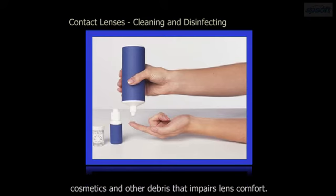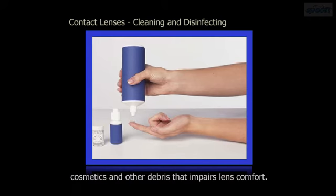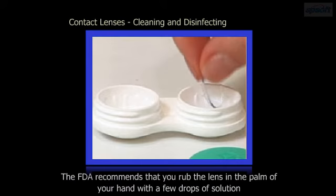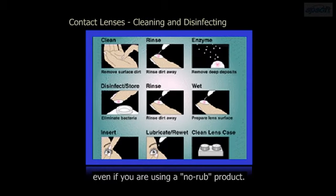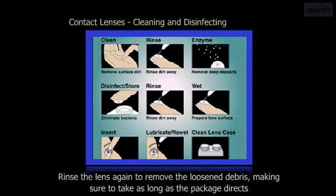Cleaning removes eye-produced build-up, cosmetics, and other debris that impairs lens comfort. The FDA recommends that you rub the lens in the palm of your hand with a few drops of solution, even if you are using a no-rub product. Rinse the lens again to remove the loosened debris, making sure to take as long as the package directs.